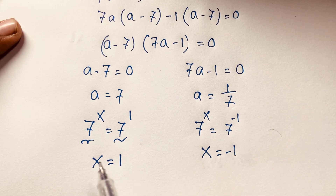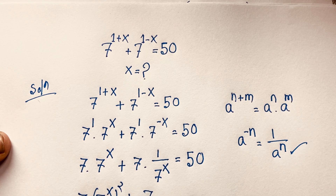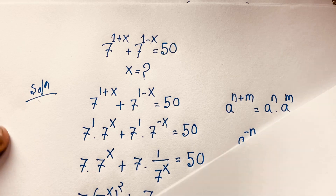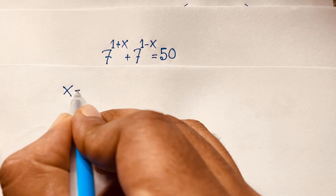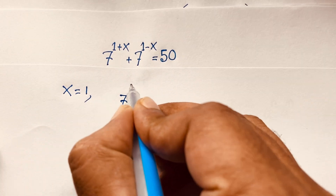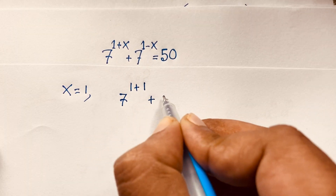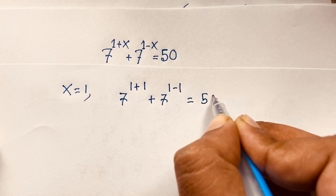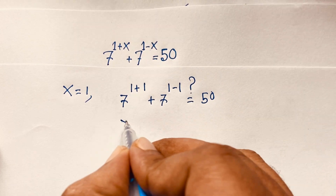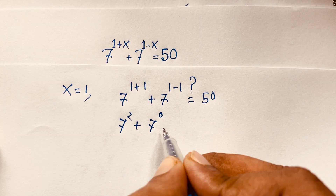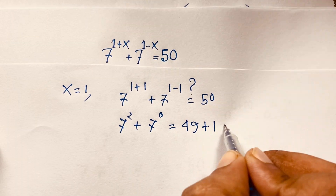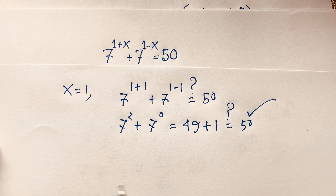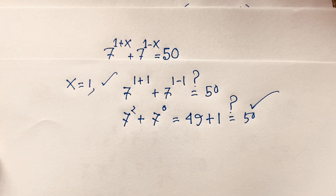Let's verify. When x equals 1: 7^(1+1) plus 7^(1-1) equals 7² plus 7⁰, which is 49 plus 1, equals 50. Left-hand side equals right-hand side, so x equals 1 is correct.